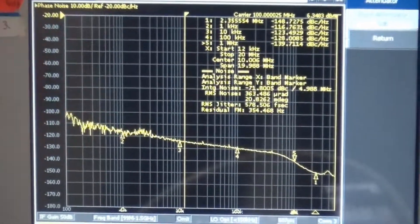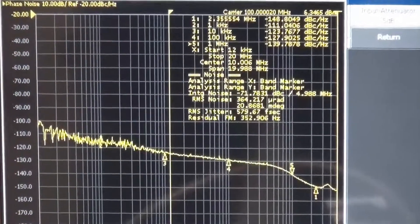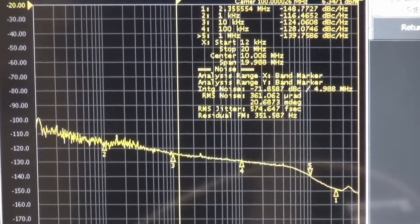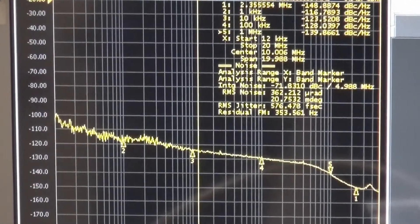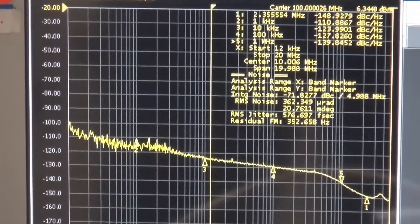As you see, the frequency changed to 100 megahertz as shown on the screen. And the phase noise is still 576 femtoseconds from 12k to 20 megahertz. The noise floor is close to 150 dBc.